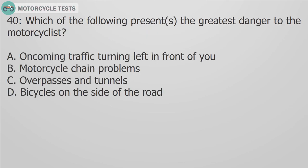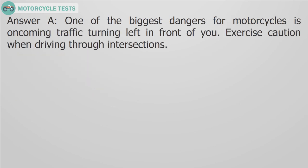Question 40. Which of the following presents the greatest danger to the motorcyclist? A. Oncoming traffic turning left in front of you. B. Motorcycle chain problems. C. Overpasses and tunnels. D. Bicycles on the side of the road. Answer A. One of the biggest dangers for motorcycles is oncoming traffic turning left in front of you. Exercise caution when driving through intersections.